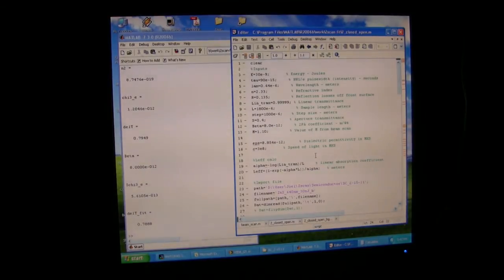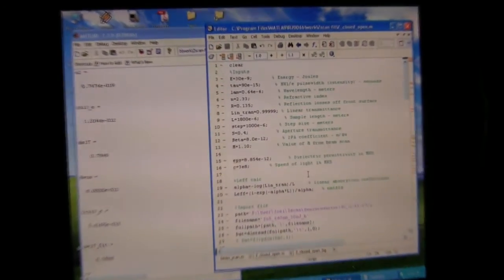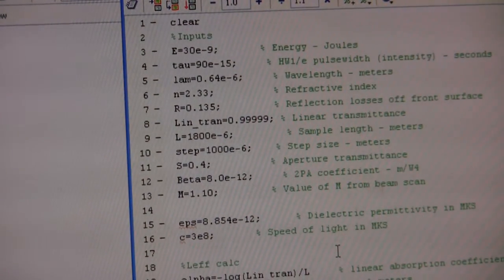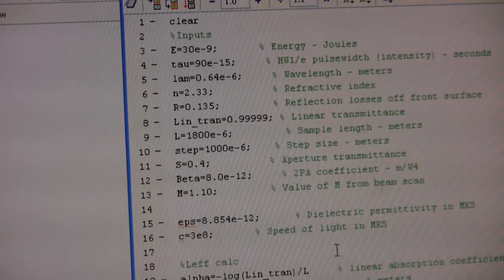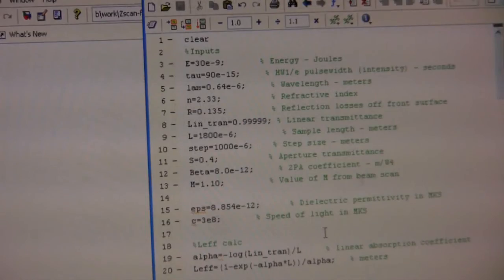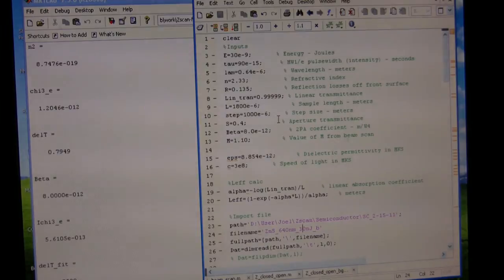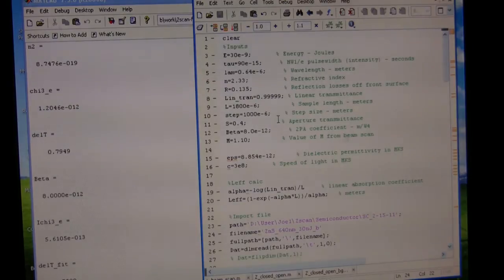So once we actually have the data from the experiment, we can use a fitting routine, which was defined in the original Z-scan paper some 20 years ago, and we can use the experimental parameters that we've measured before. In order to do this, we need to be able to accurately measure what the irradiance is. It means that we have to take great care in measuring the energy of the pulse, its pulse width, and its beam size. So those are things that we do prior to the actual experiment. And we can input those parameters up here, along with a number of different sample parameters, such as sample path length, linear transmittance, linear refractive index, and some other things.